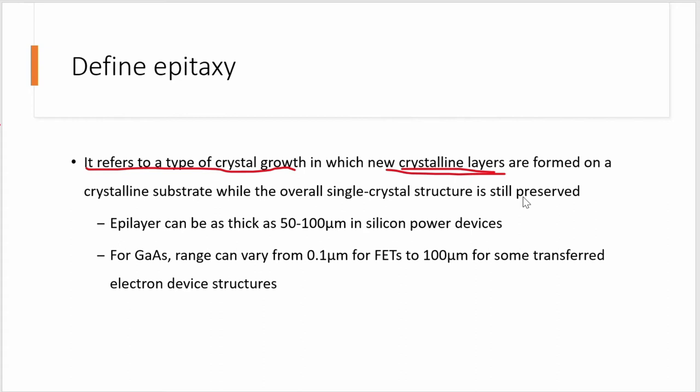Our epilayer can be as thick as 50 to 100 micrometers in silicon power devices. For gallium arsenide substrates, we use 0.1 micrometer for epitaxy up to 100 micrometers for some transferred electron devices — we can keep it that thick.